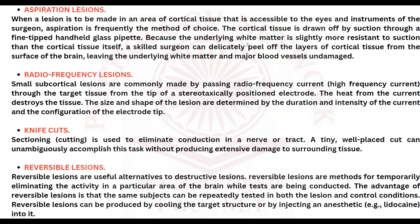The next type is radio frequency lesions. These lesions are made using a high-frequency radio frequency current. The surgeon targets the specific tissue in the brain where the lesion is to be made, and the heat generated by the high-frequency current destroys that tissue, creating the lesion — meaning there is damage to the targeted tissue.